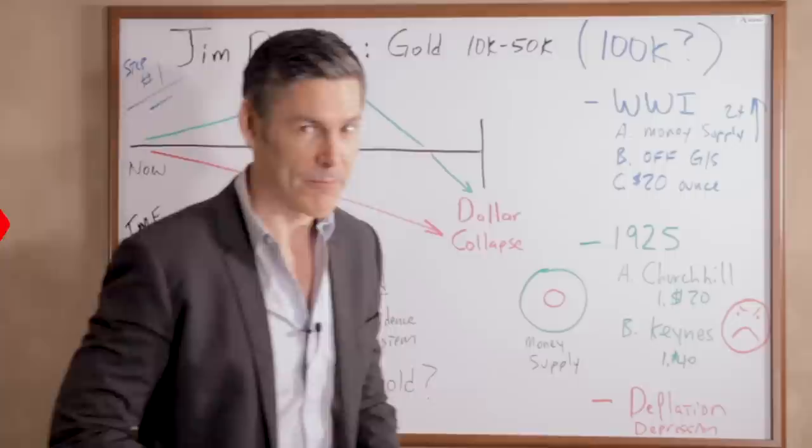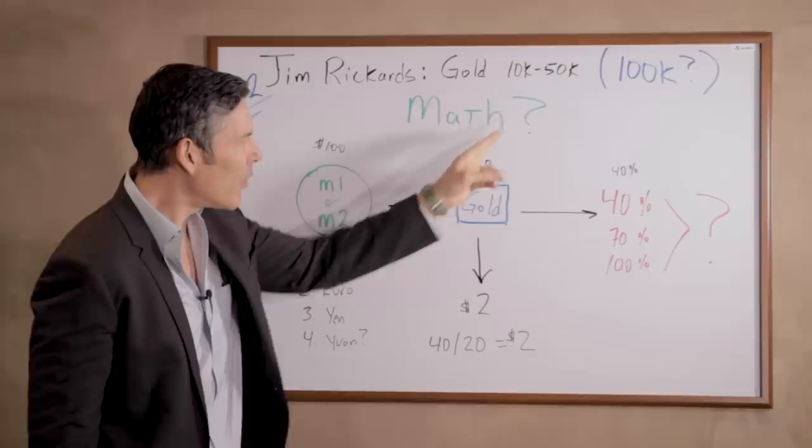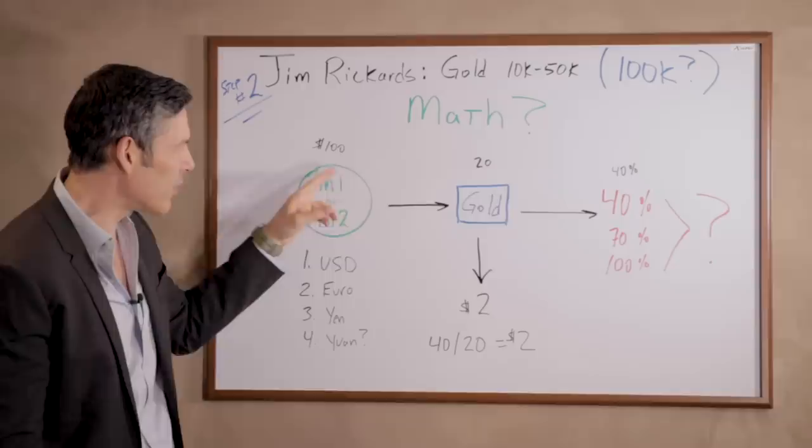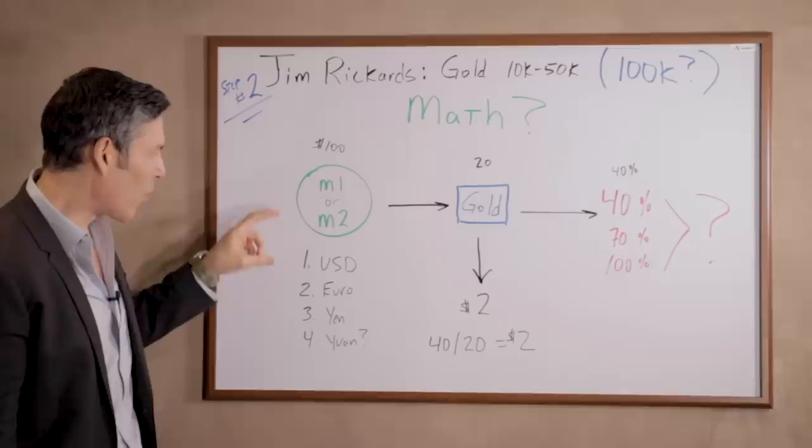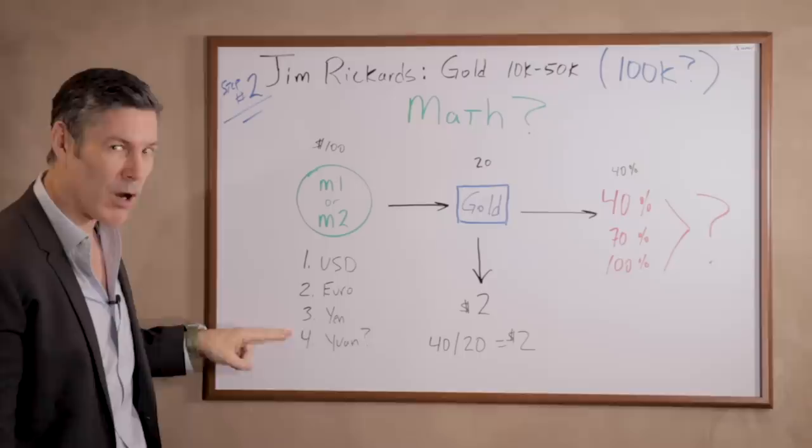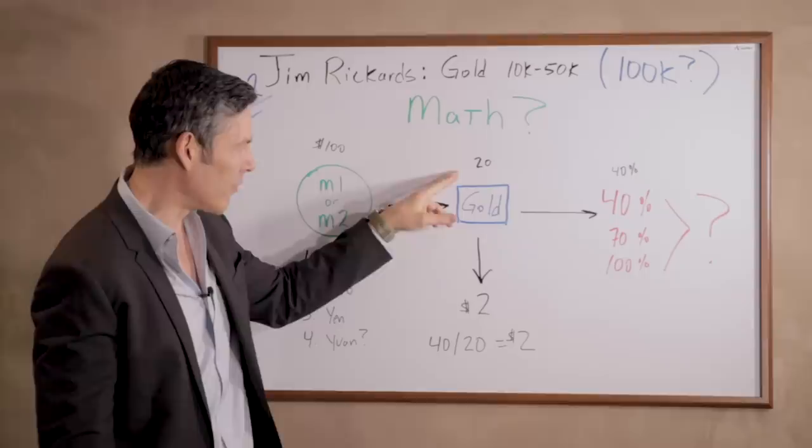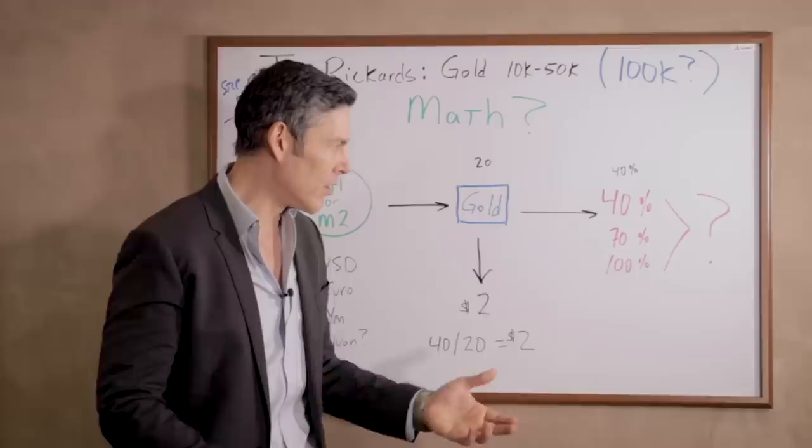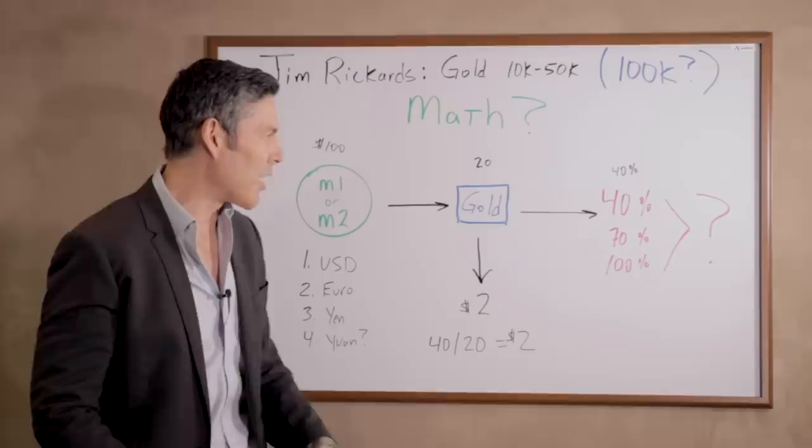Step number two, let's go through Jim Rickards' math and understand how he comes to these numbers, $10,000 an ounce and $50,000 an ounce. To make this really clear, I'm going to show you how a gold standard is set up, and then we're going to use very small numbers until we get to the really big ones. What Rickards does is he takes M1 money supply or M2 for the USD, the euro, the yen, and I think he might use the yuan. He then looks at the number of ounces of gold that these countries have at their disposal. He then asks the question, do we want a 40% gold standard, 70%? Do we want 100% gold standard? And then it's just simple eighth grade math.